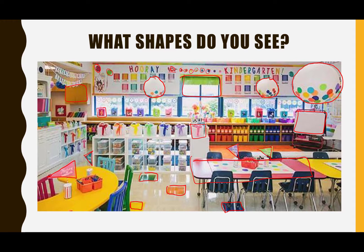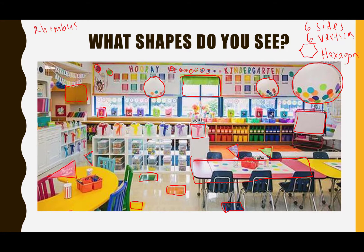What about a hexagon? I didn't see anything in this picture that looks like a hexagon. Remember, a hexagon has six sides and six vertices. Maybe you can tell me if you see a shape that looks like this in the picture. What about a rhombus — did anyone see a rhombus? I didn't see a rhombus, but there might be one hidden in here somewhere. If you see one, you should write me a message and tell me that you saw a rhombus.